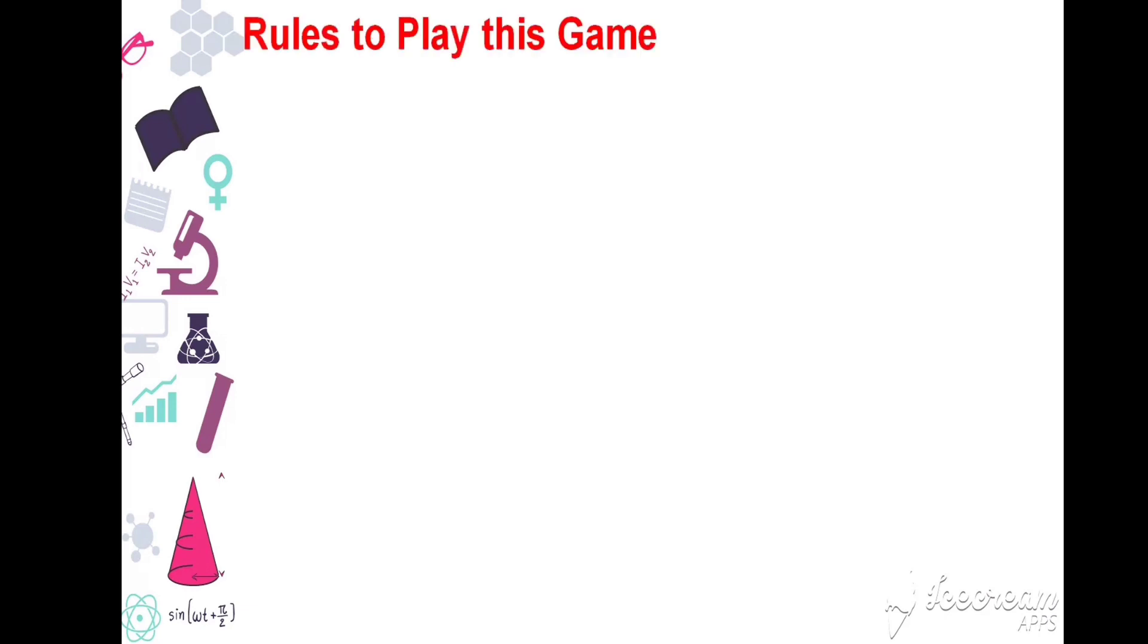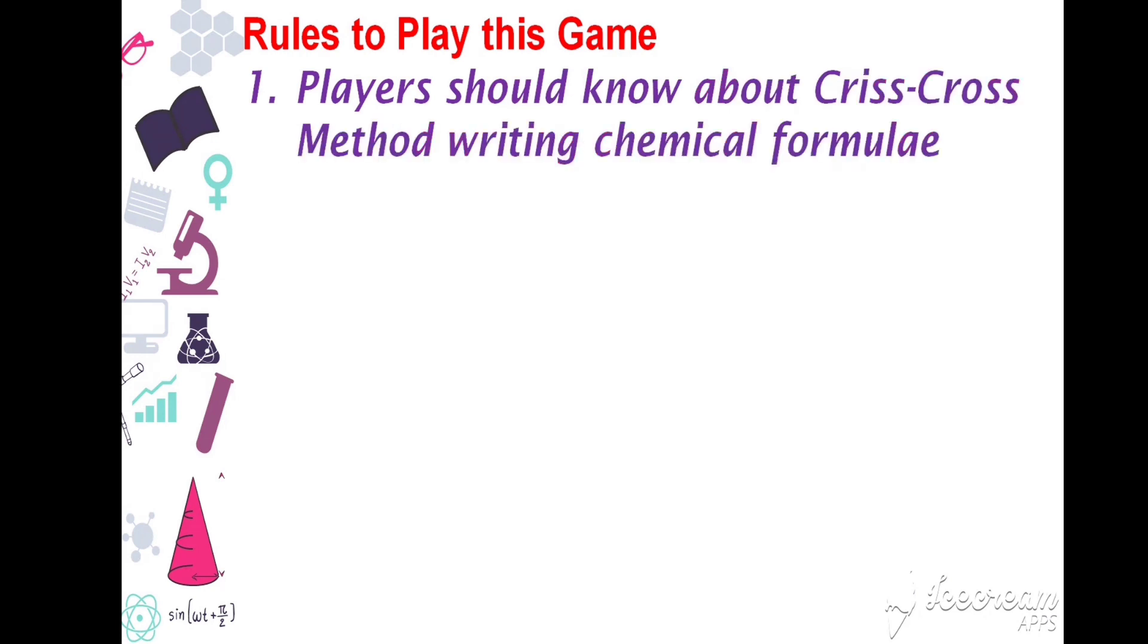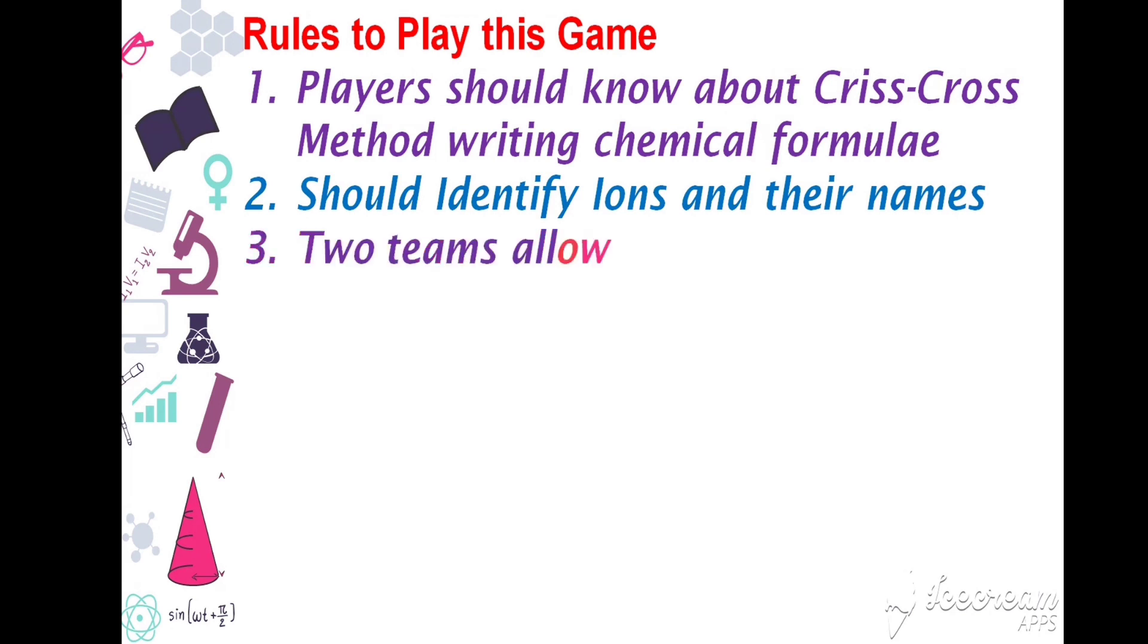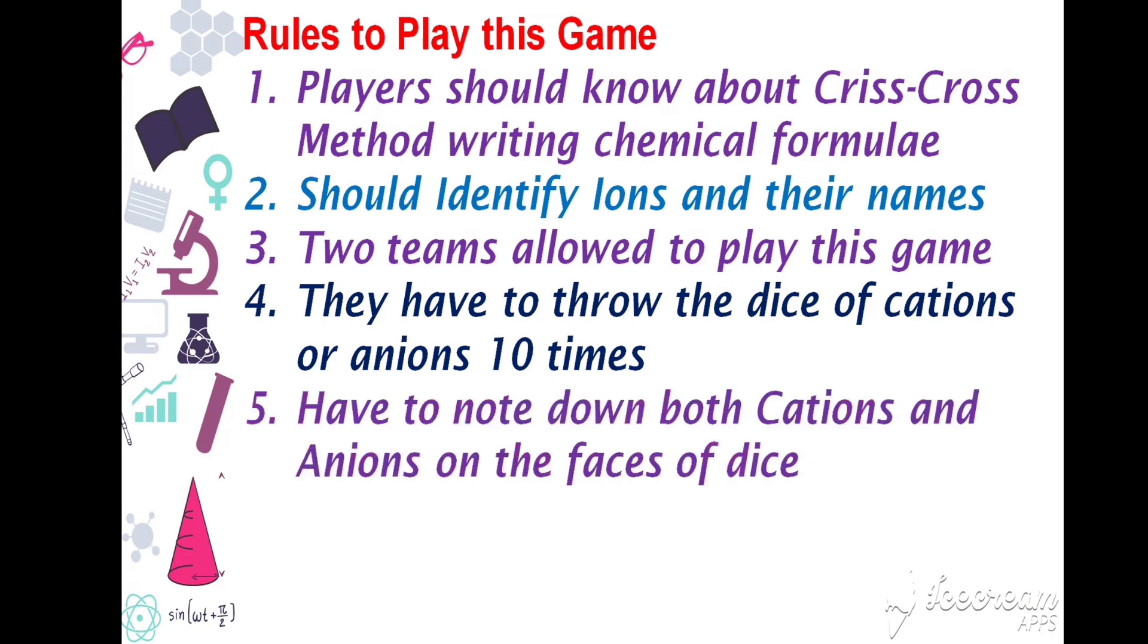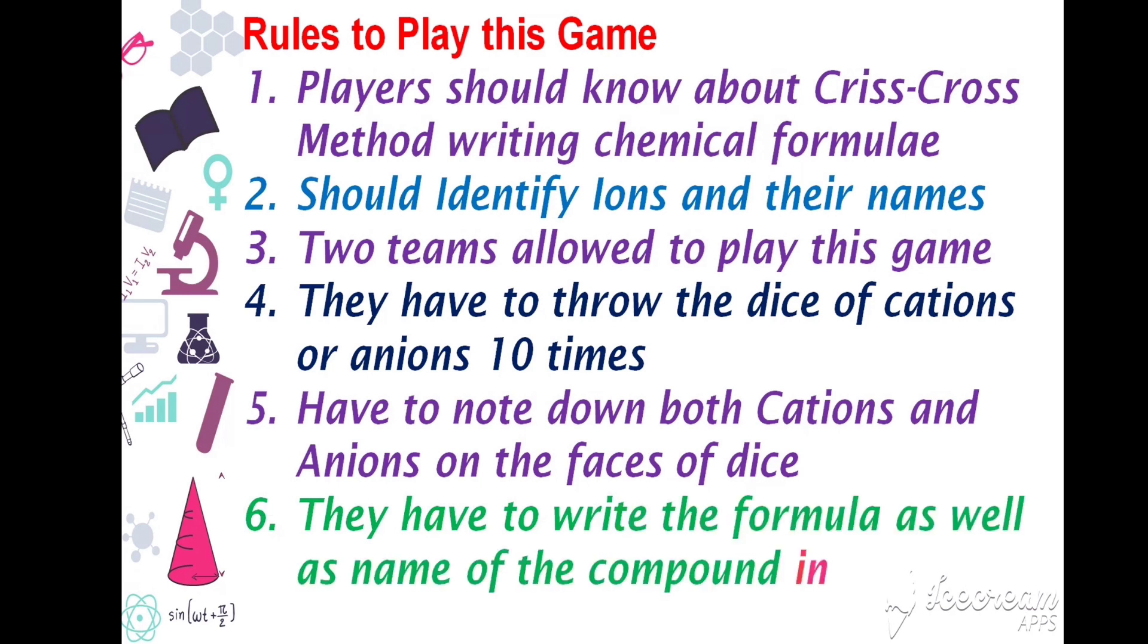Rules to play this game: Players should know about crisscross method writing chemical formulae. They should identify ions and their names. Two teams allowed to play this game. They have to throw the dice of cations or anions 10 times. They have to note down both cations and anions on the faces of the dice. They have to write the formula as well as the name of the compound in 10 minutes. Whoever gets more marks, they are the winners.